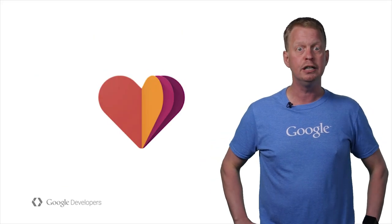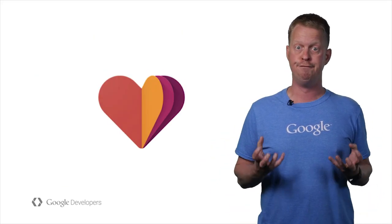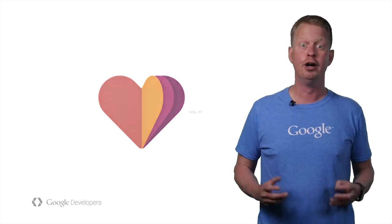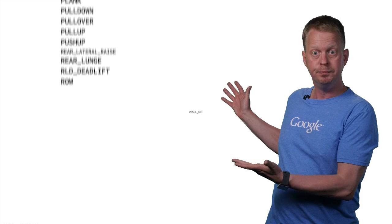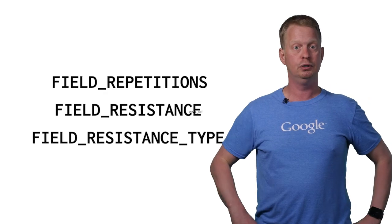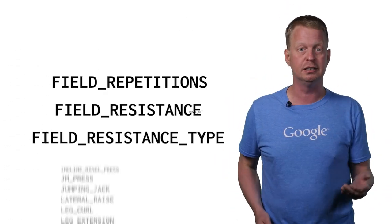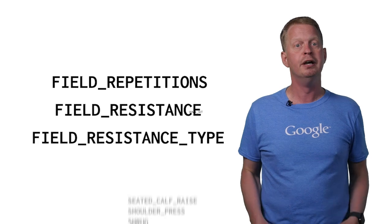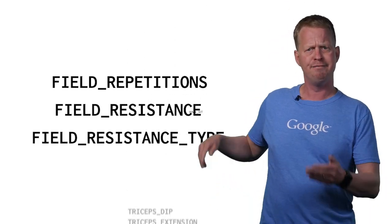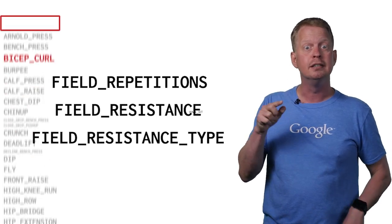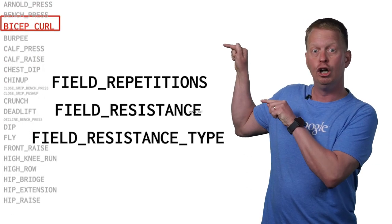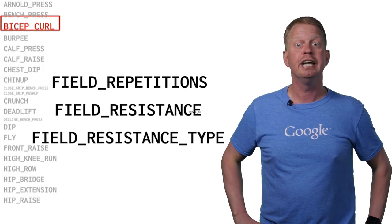Rounding off this release is news in Google Fit, which now supports a very large number of exercise types. The Java doc will even include descriptions on how to physically perform them. For each of these, you can record the number of repetitions, the resistance, and the resistance type. While I have no idea what most of these are, there is one I do recognize — Bicep Curl. Let's try that out in the real world.